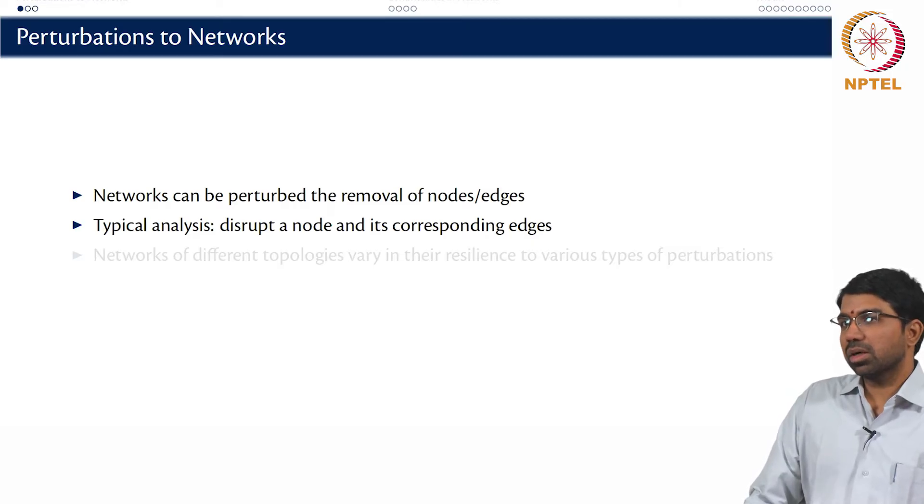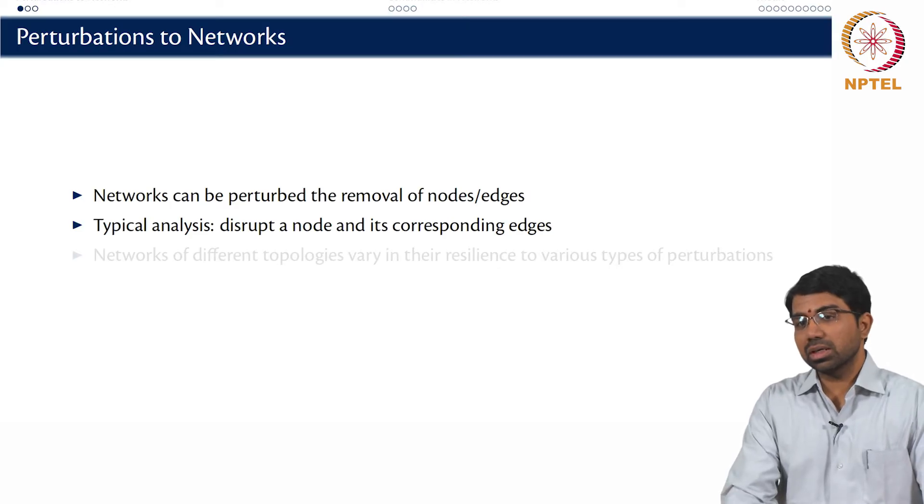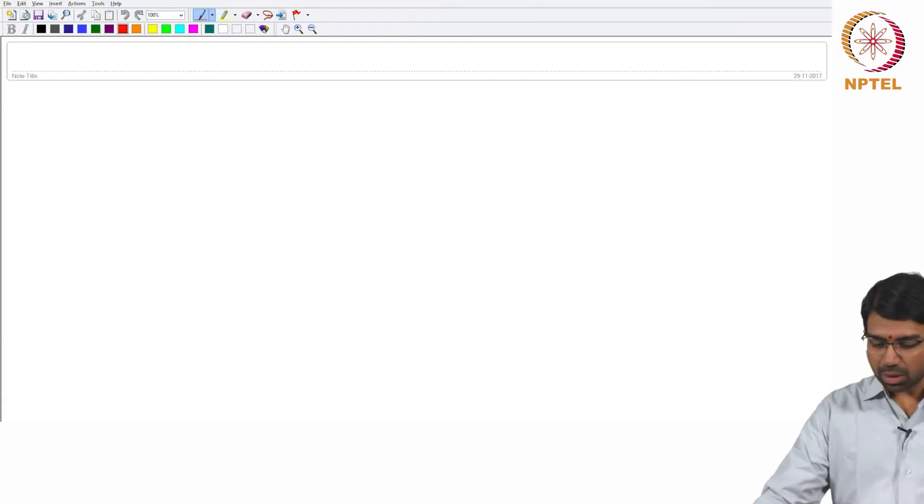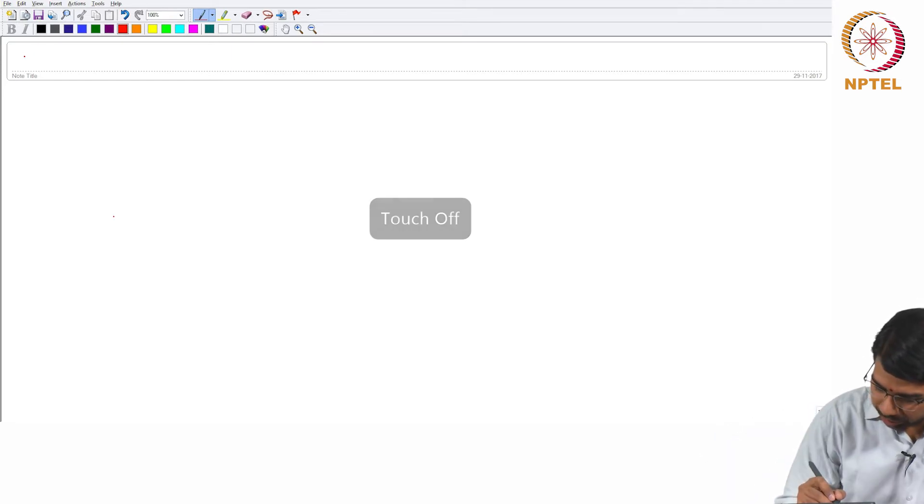In biological networks, you are often interested in trying to find out what happens when something fails. You can also study what happens when you add something, but more than adding something, maybe in a biological network context one interesting perturbation would be what happens when a gene duplicates. So let's look at network perturbations.